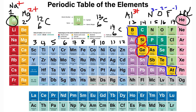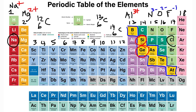Lithium is found in lithium-ion batteries. Sodium is found in table salt — table salt is sodium chloride, containing sodium and chlorine in their ionic forms.